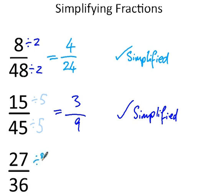Last one: 27 over 36. Both divide by 3. If they both divide by 3, then the fraction I have, or that I've simplified, is 9 over 12. Simplified.